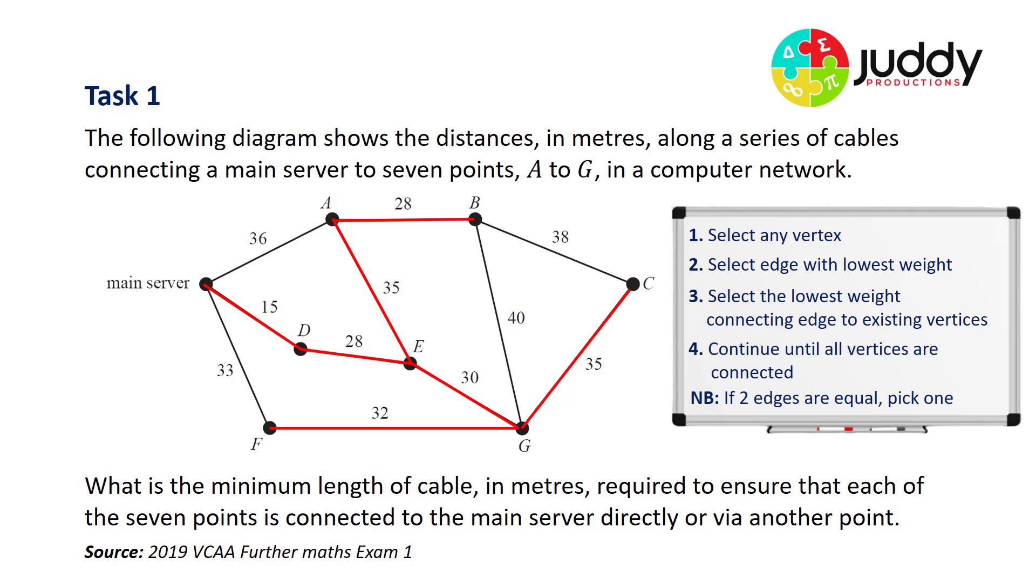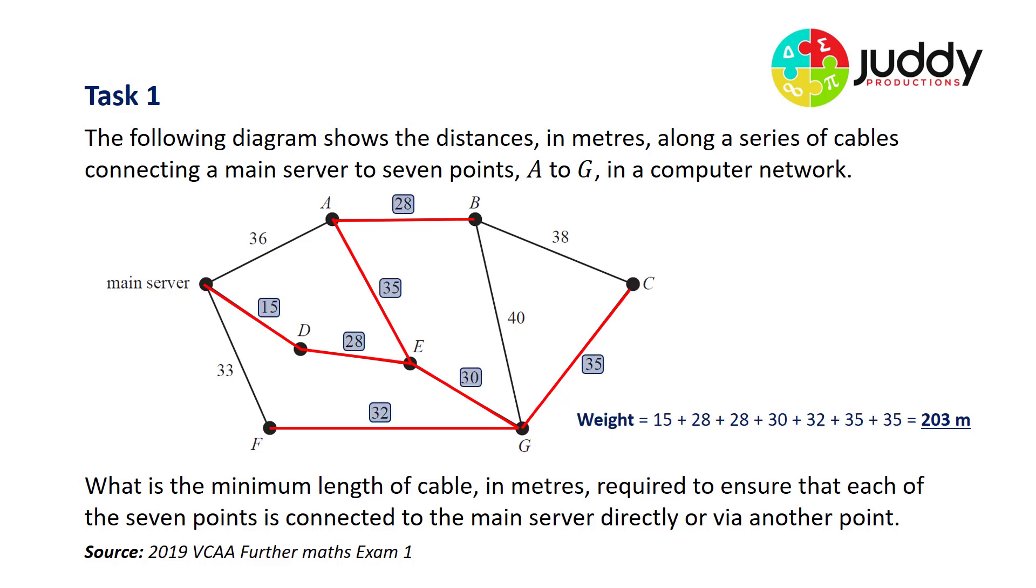And at this point, I've now connected all eight vertices. So my job is done in terms of applying Prim's algorithm. And to calculate the weight, I simply have to add up the individual edge weights. So that gives me a total of 203 meters. So what's the minimum length of cable in meters required to ensure that each of the seven points is connected to the main server directly or via another point? The minimum length of cable is 203 meters.